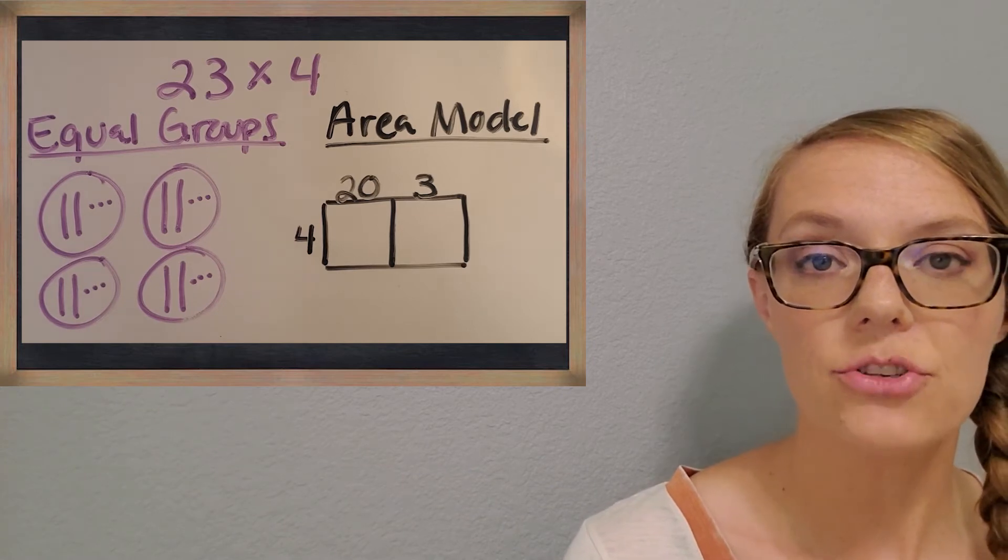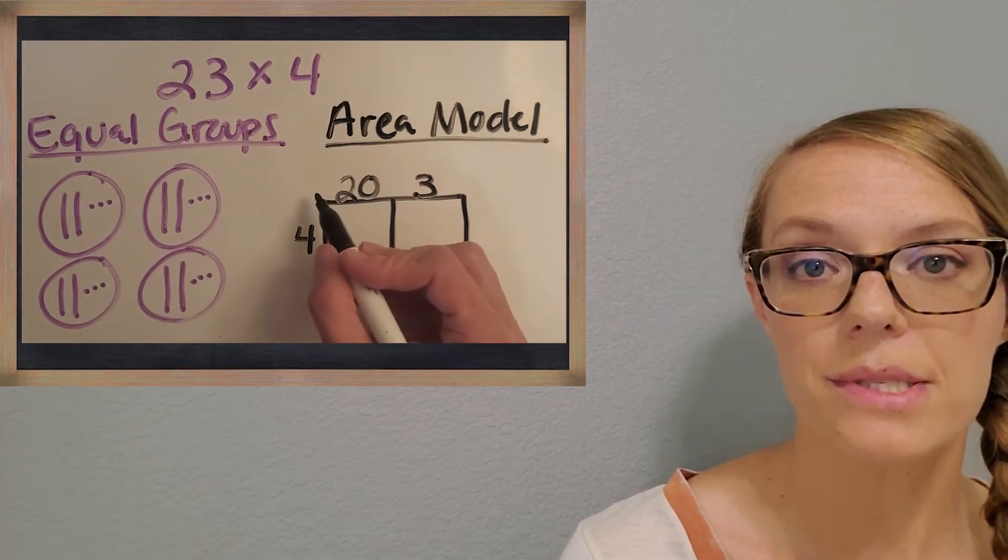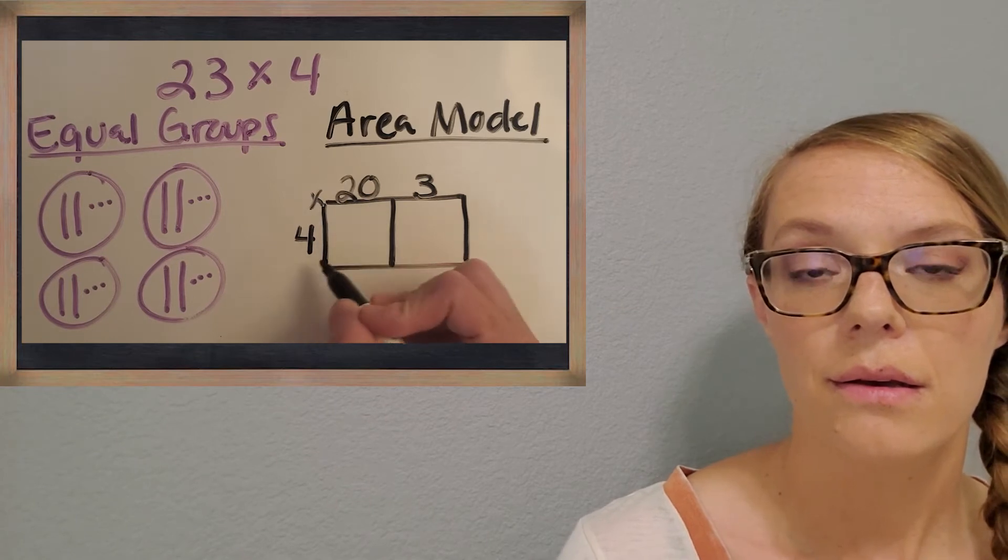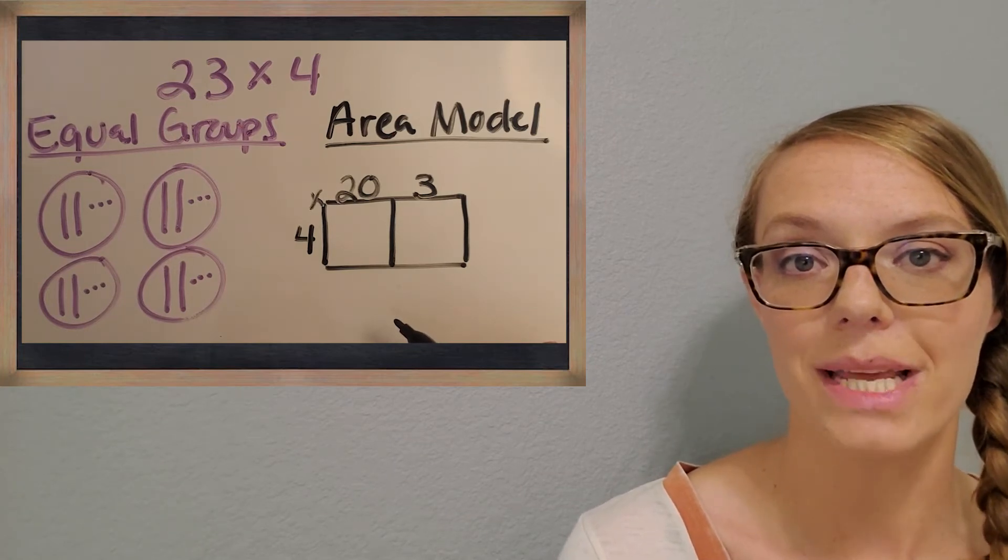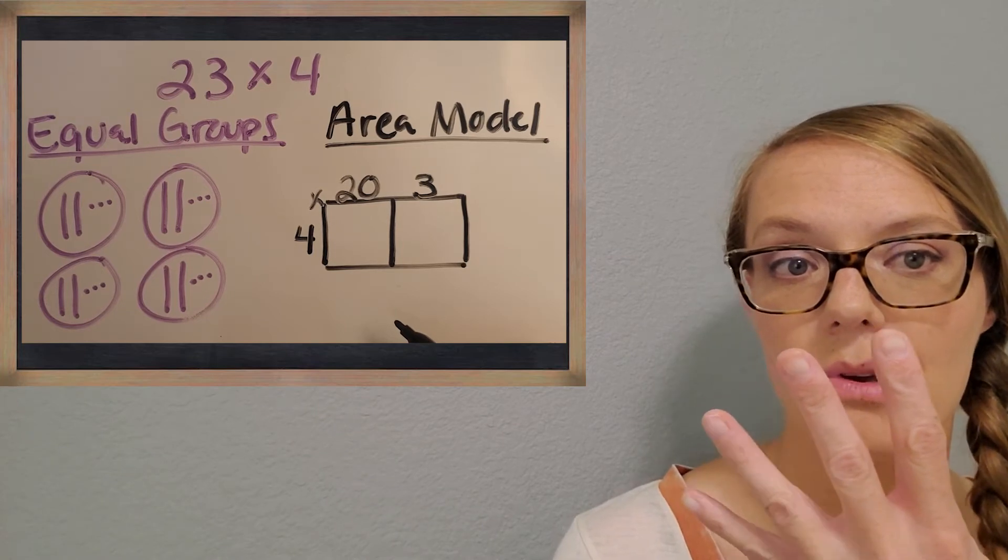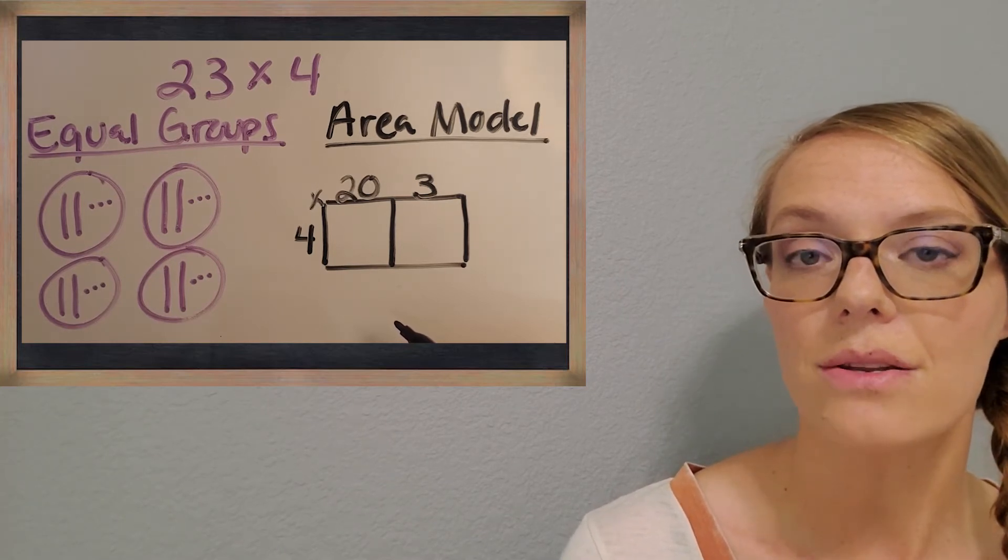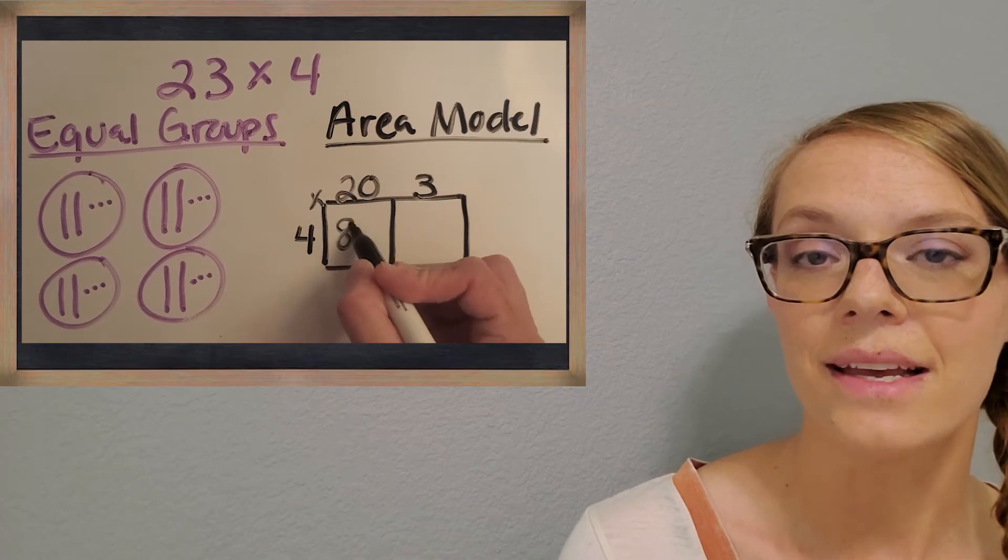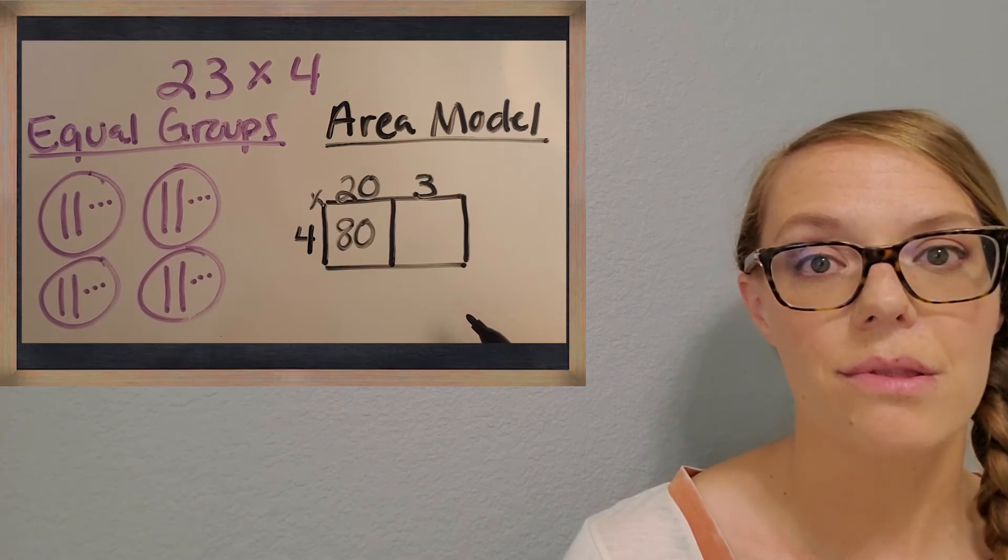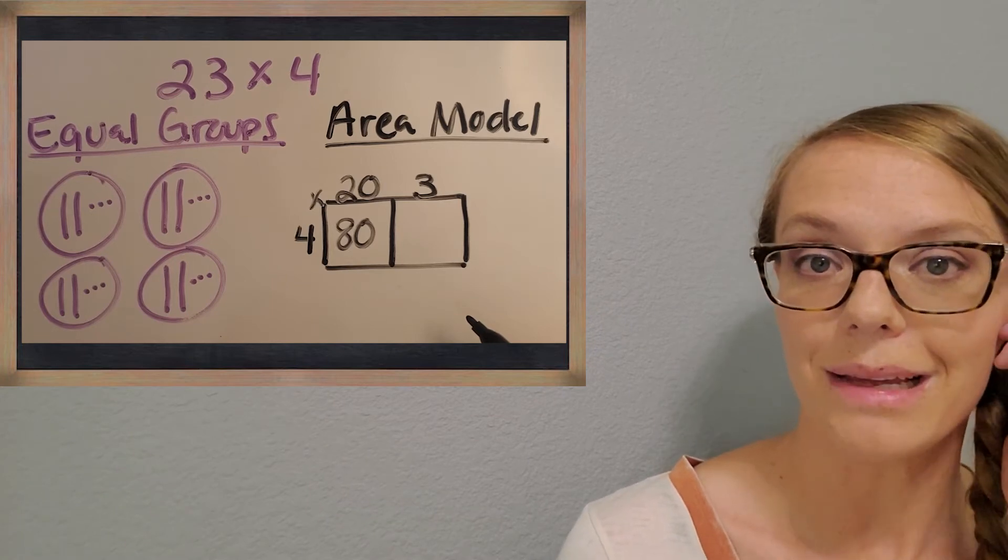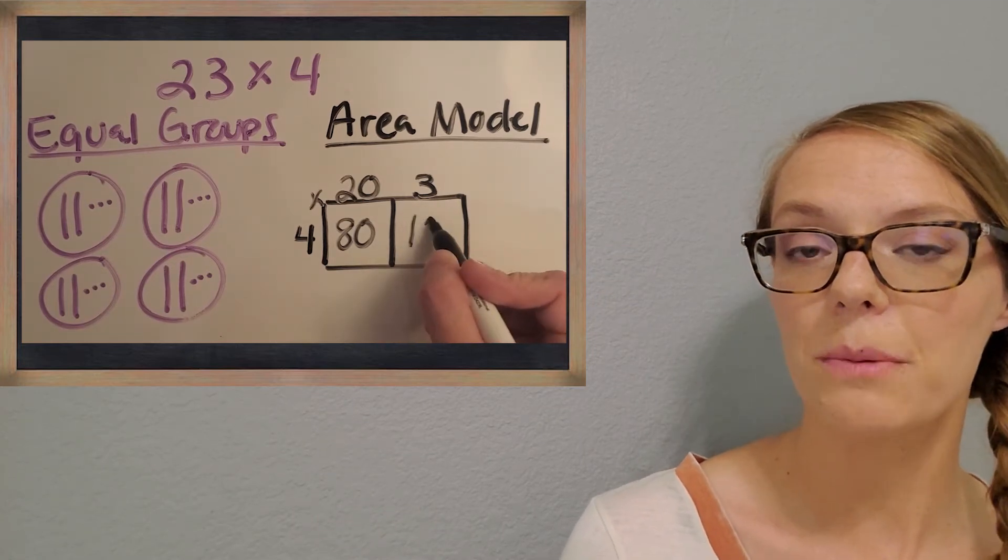And now we can work on each section of the rectangle. So the first section is going to be four times that 20. So what do you think is four times 20? You can be thinking about counting by 20s four times. You can also be thinking about your two facts, two, four, and then stick a zero on the end. You got it, 80. Now the last section is thinking about four times three. So what do you think about four times three or four groups of three? You can count by threes also. Awesome. 12. We're going to put 12 in there.